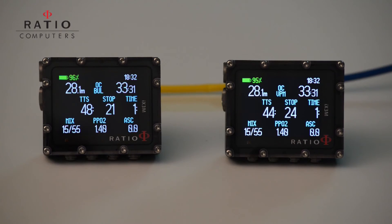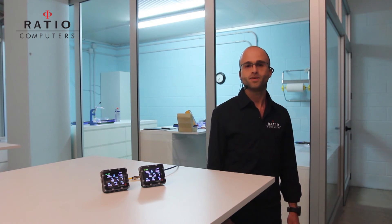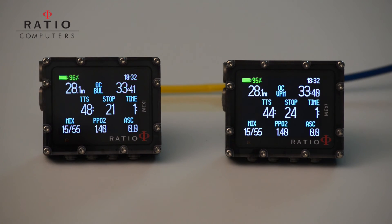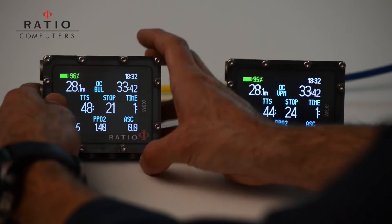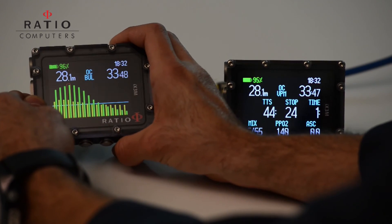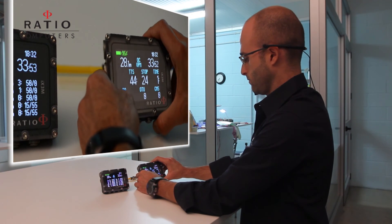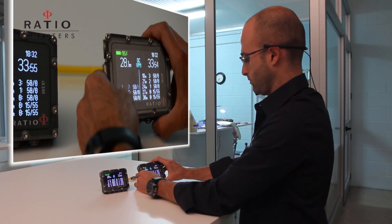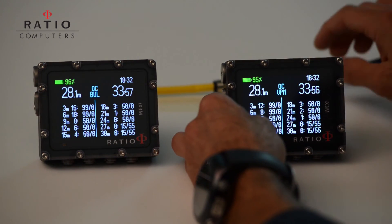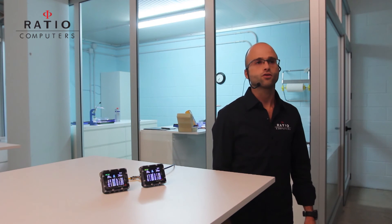During our dive we can consult the complete table of decompression stops on our computers, so that you can check which is the difference between both algorithms, Buhlmann and VPM. Let's check these tables. We just need to navigate between our different screens and see in both tables which is the scheduling of the decompression stops.